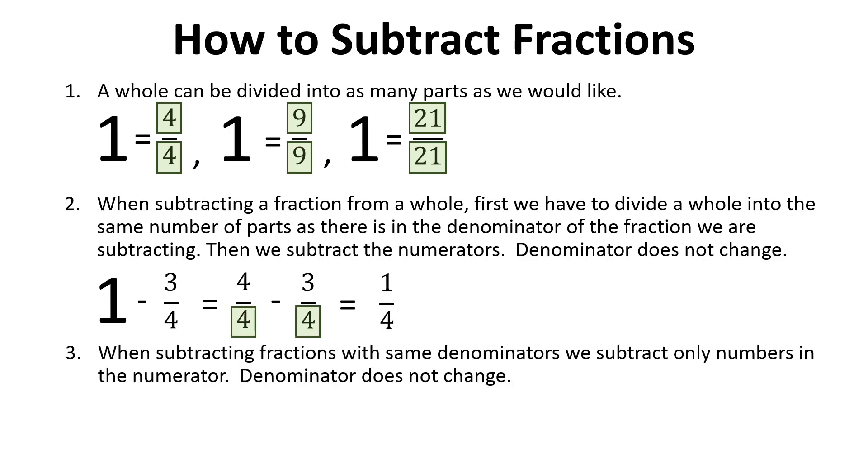When subtracting fractions with the same denominator, we subtract only numbers in the numerator. Denominator does not change. For example, 15 over 16 minus 3 over 16 is 12 over 16, or 3 over 4 in the simplest form.